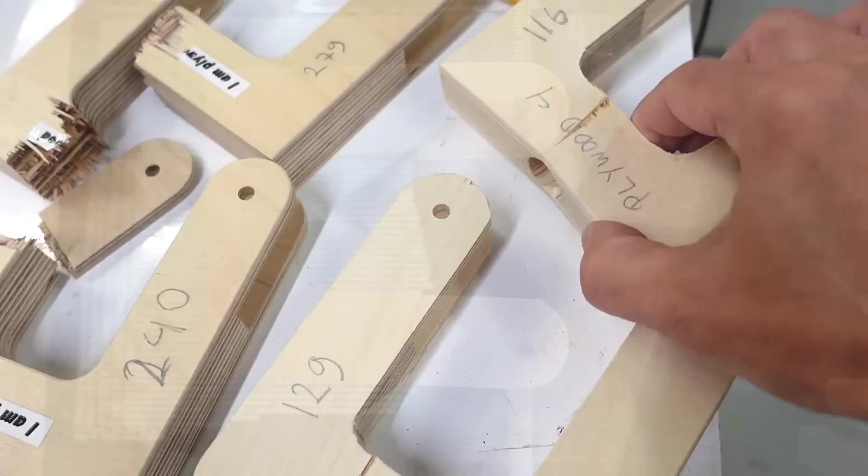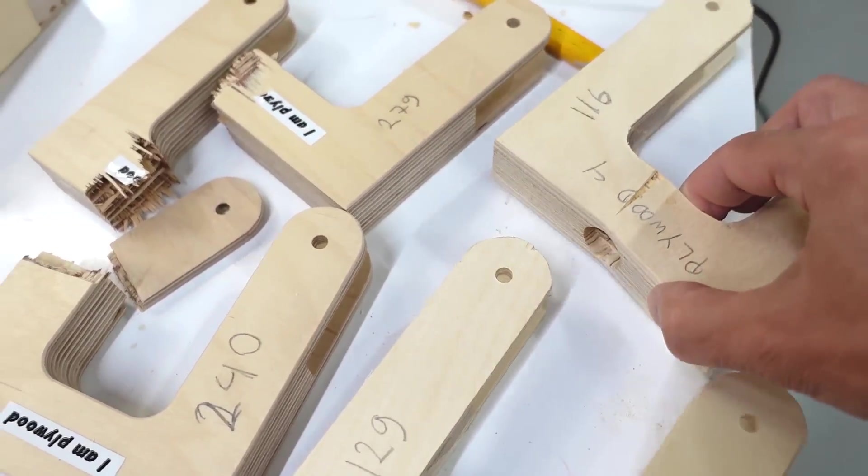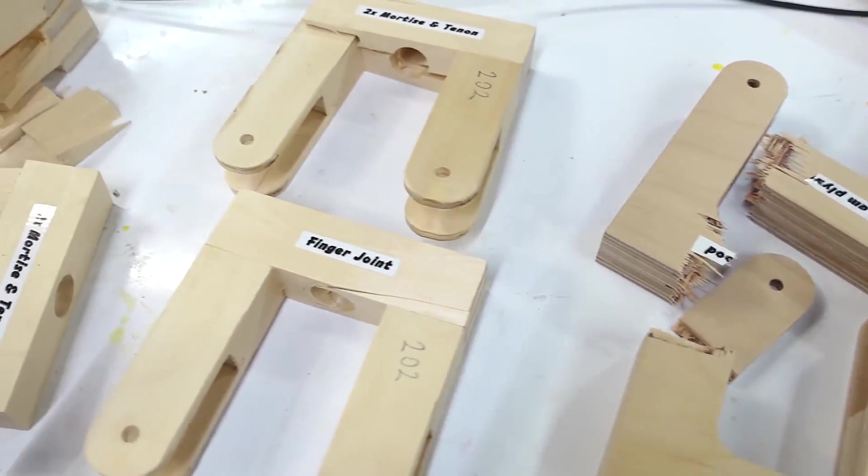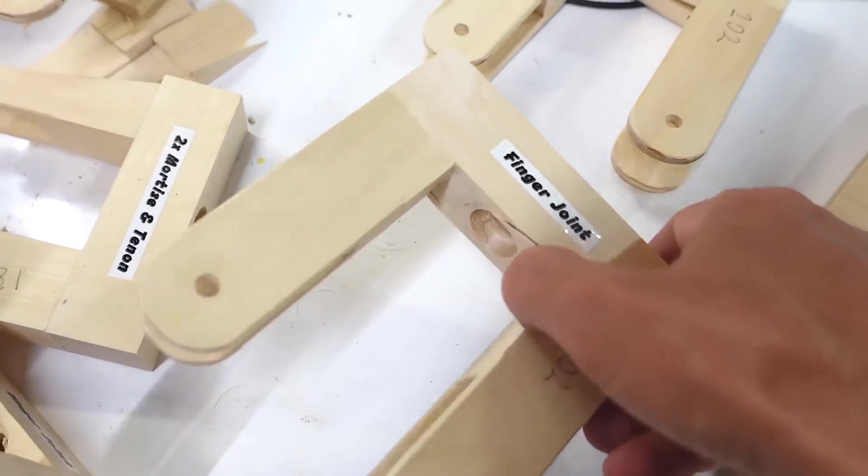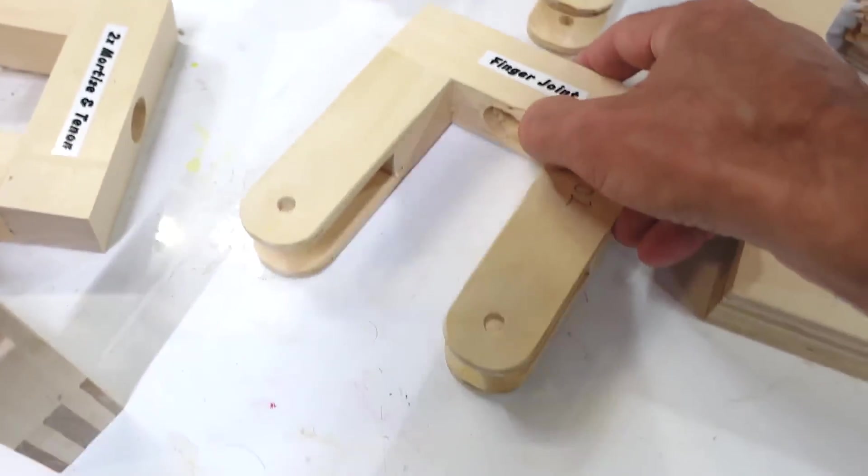As expected, my new plywood samples both failed around the hole. So, plywood isn't really a contender. And, the strongest are the double mortise and tenon and the finger joint.